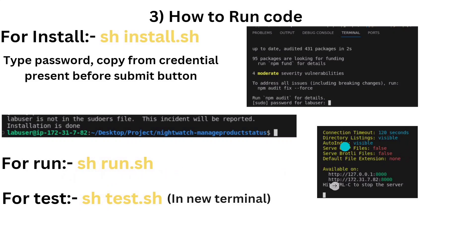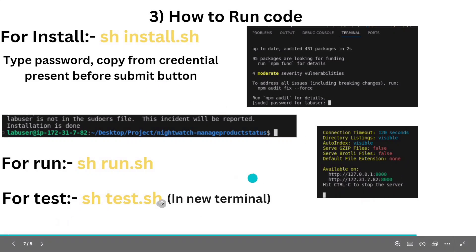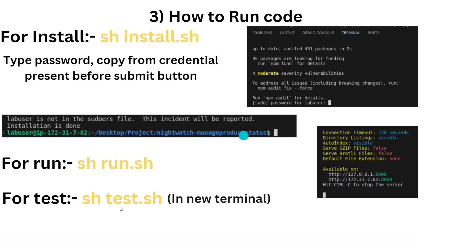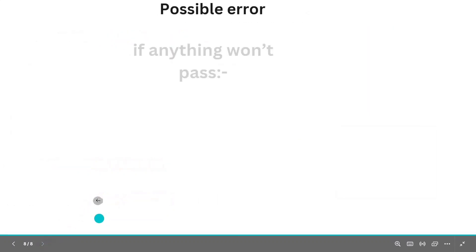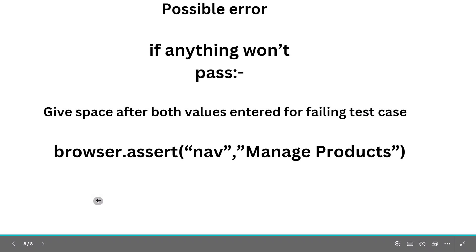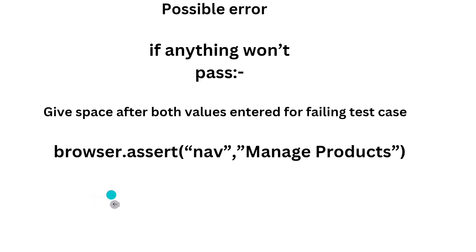After installing, type 'ss run.sh' in the same terminal to run the script. You will see a value and a 'Ctrl+C to stop the server' message — do not stop it. Open a new terminal, navigate to the same project folder again, and then type 'shtest.sh'. This will show you which test cases are passing or failing.